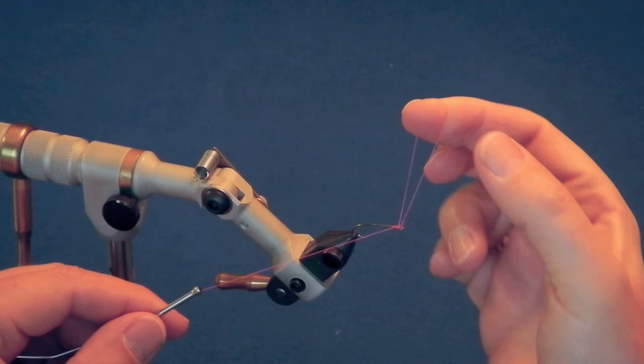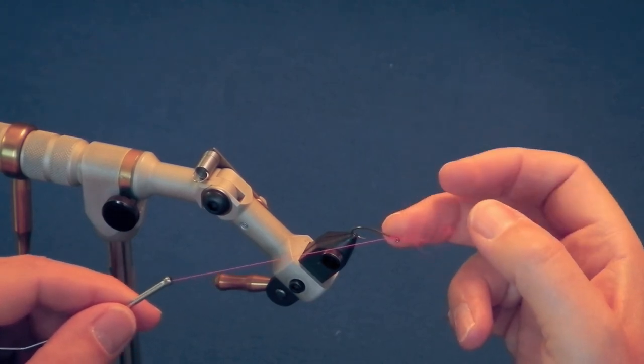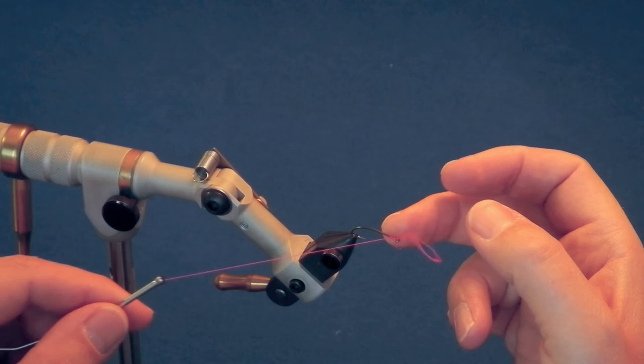With the loop pulled against the hook shank away from you, pull the loop straight up and take your middle finger out of the loop. Use the pad of your middle finger to trap the thread against the hook shank and then remove your index finger from the loop.